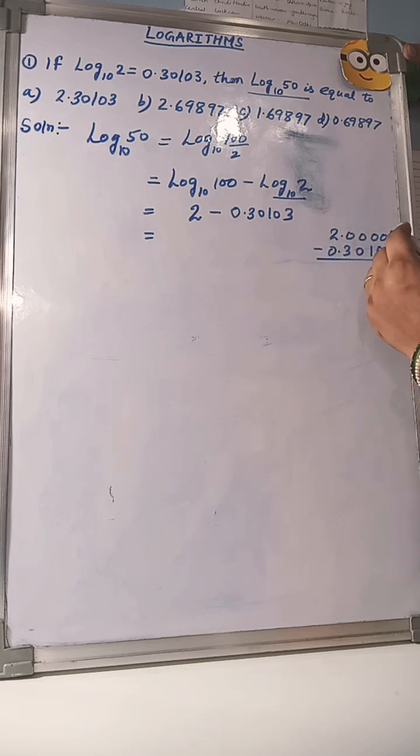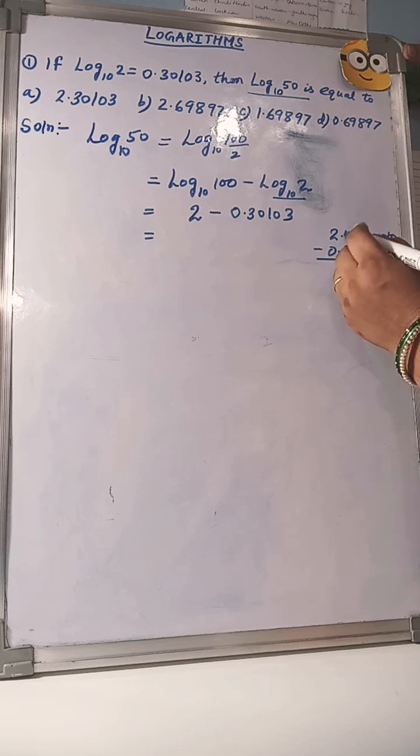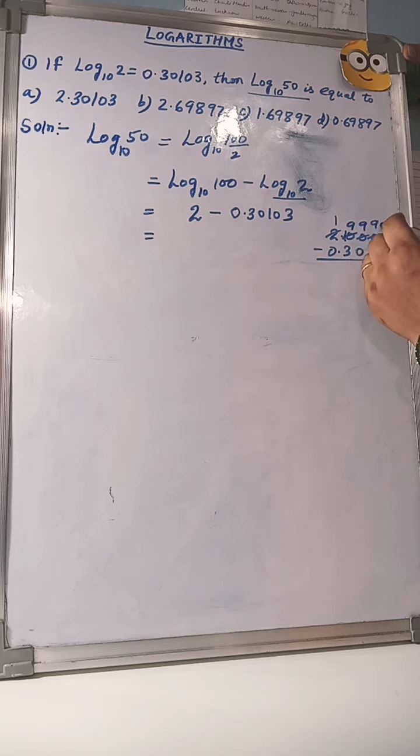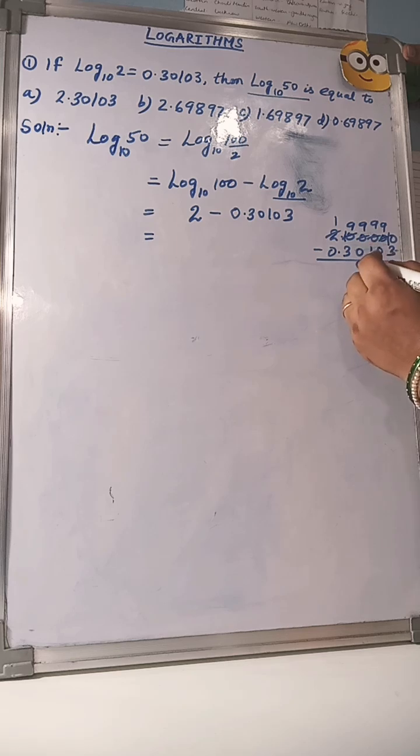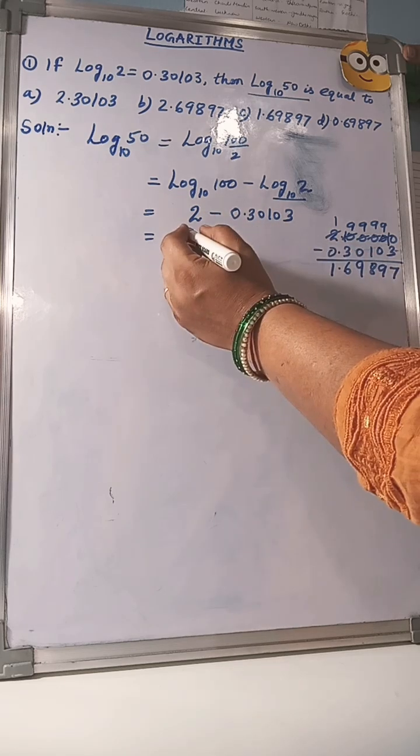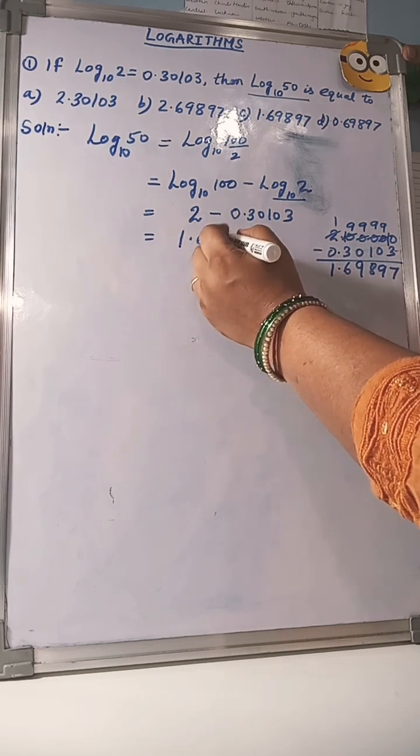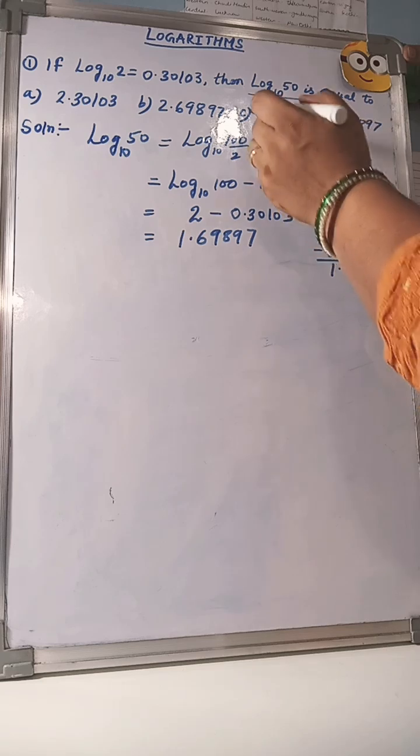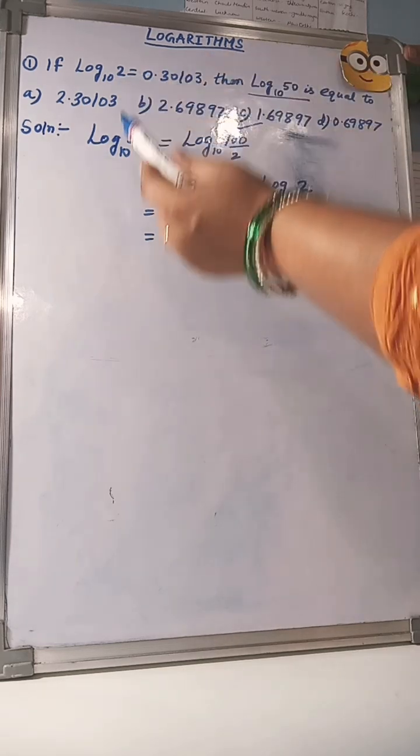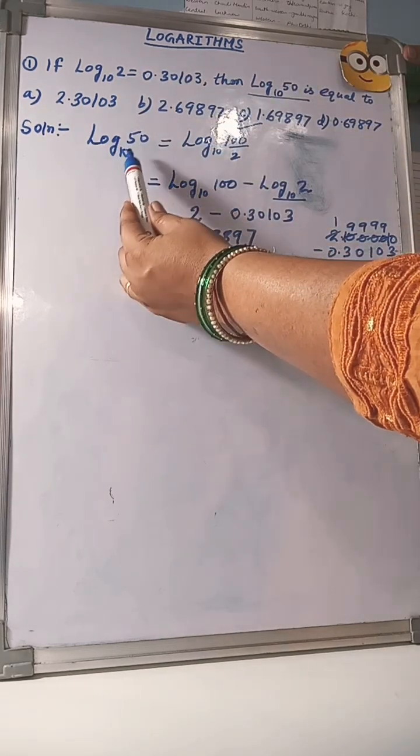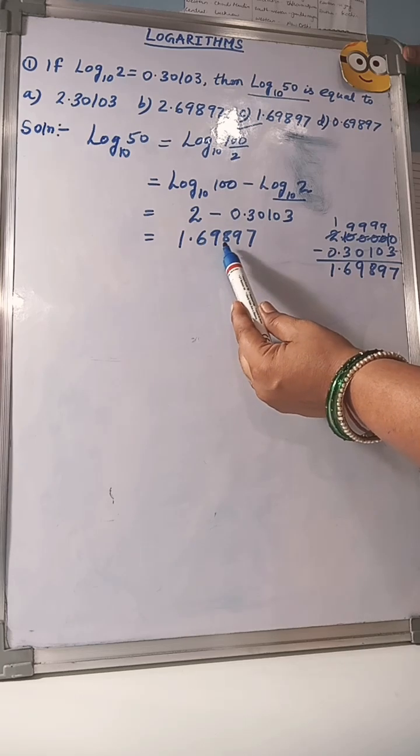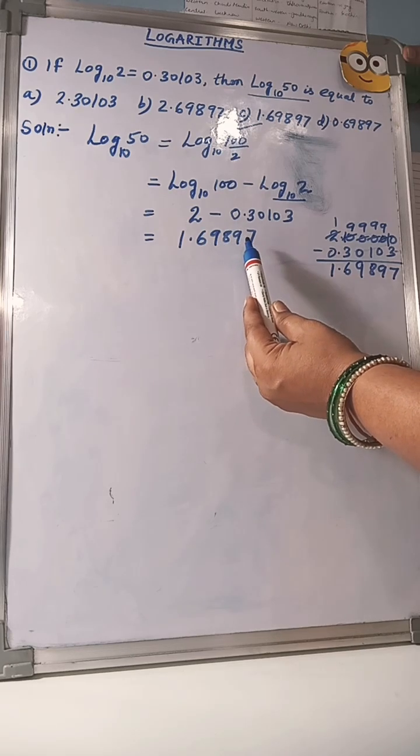Now, performing the subtraction: take 2.00000 minus 0.30103. Using borrowing: 10 minus 3 is 7, 9 minus 1 is 8, 9 minus 0 is 9, 9 minus 3 is 6, and 1. This gives us 1.69897. So, the value of log 50 to the base 10 equals 1.69897.